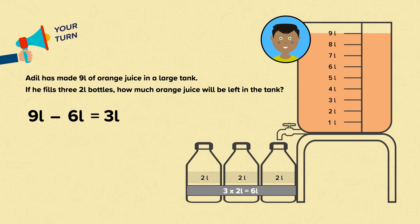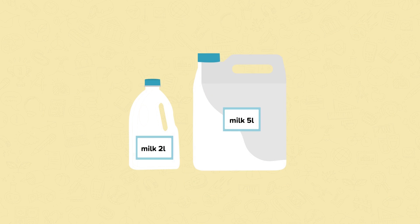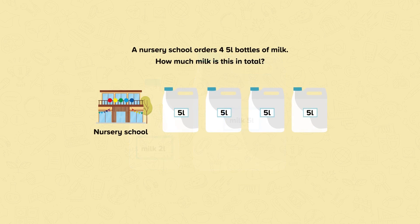Now let's move on. A dairy sells milk in either 2 liter or 5 liter containers. A nursery school orders 4 5-liter bottles of milk. How much milk is this in total? To solve this calculation we need to use multiplication. We need to know what 4 lots of 5 liters are. 4 times 5 equals 20.